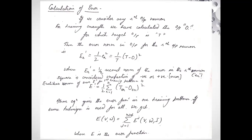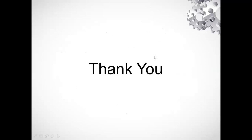In the backpropagation network, we have taken the input at the input layer and calculated the output at the input layer, then calculated the input and output of the hidden layer, then the input and output of the output layer, and lastly the error for our training set of patterns. That's all for today. In the next lecture, we are going to do the backpropagation, which is very important. Thank you everyone.